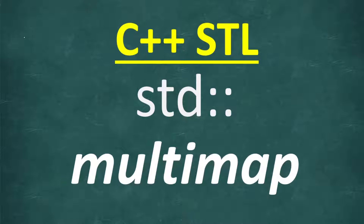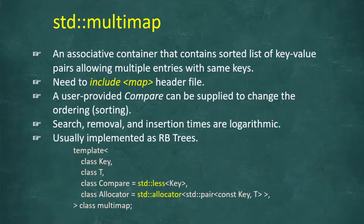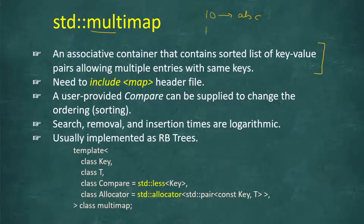In this lesson we are going to study the multimap STL data structure. In the last lesson we had seen map, which keeps unique pairs of keys and values. As the name says, multimap allows multiple keys, so duplicate keys are allowed. A big difference is that multiple keys are allowed - for example, if 10 is mapped to 'abc' and we insert 10 again with value 'bcd', this is allowed in multimap, but in map only the first occurrence is kept.